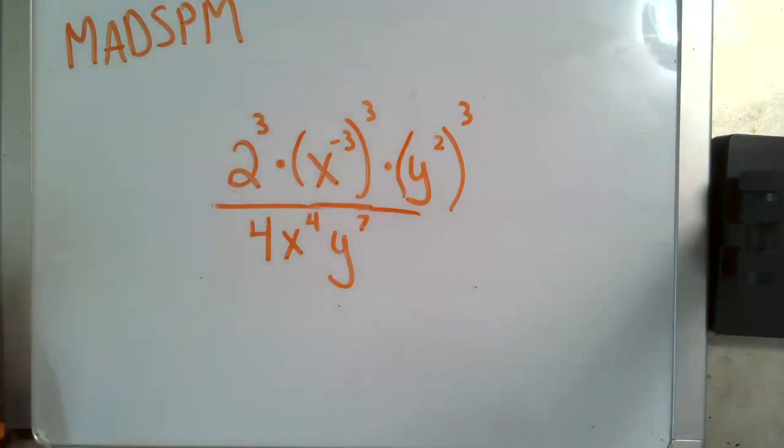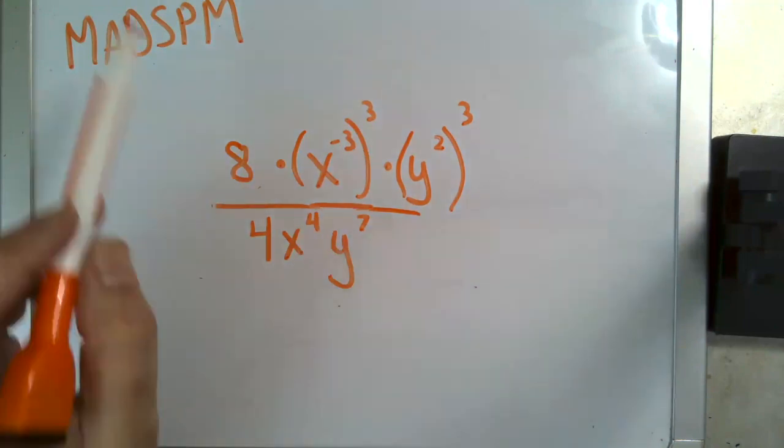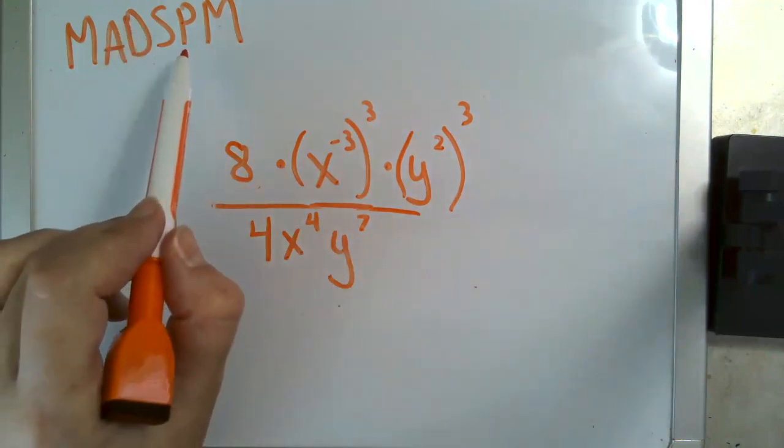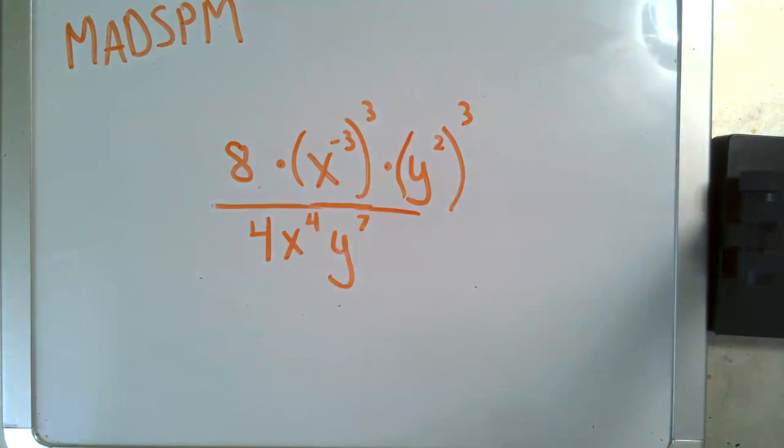Two to the third, that's a number raised to a power. So I just do that out. Two times two times two. So that is x to the negative three to the third. Well, I can look at my MADSPM and when I'm raising to a power, I multiply the exponents. So that's x to the negative three times three or x to the negative nine.